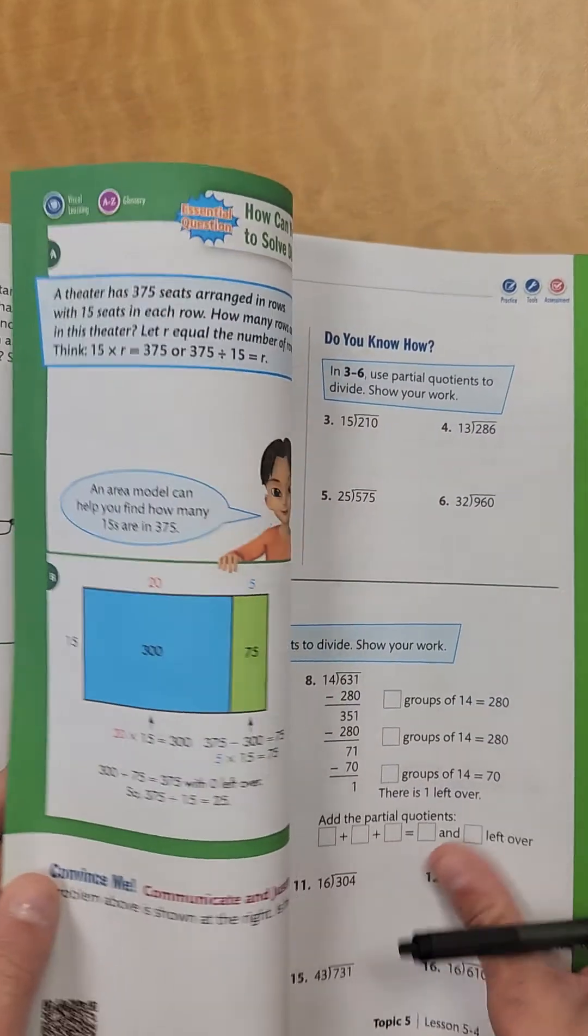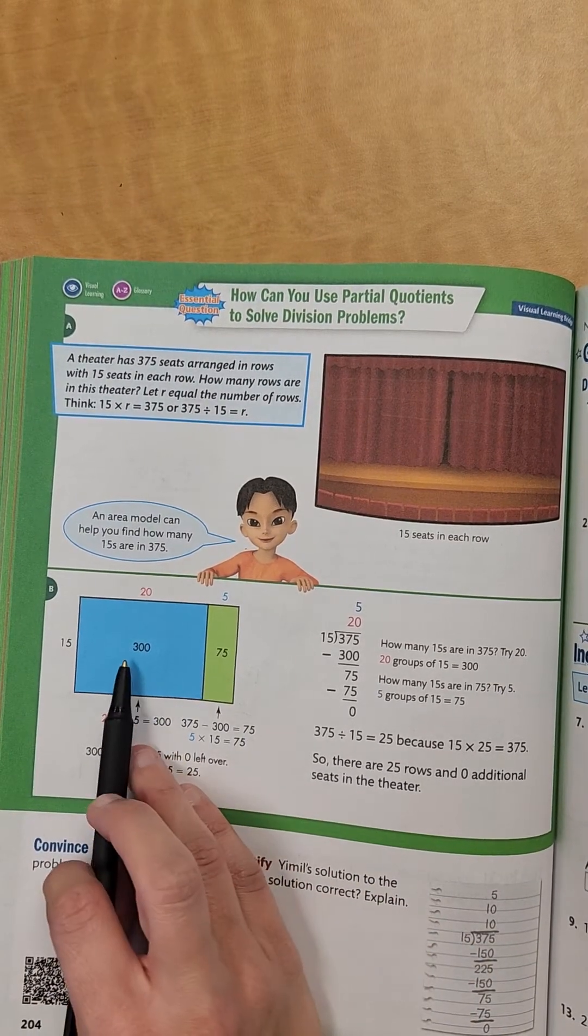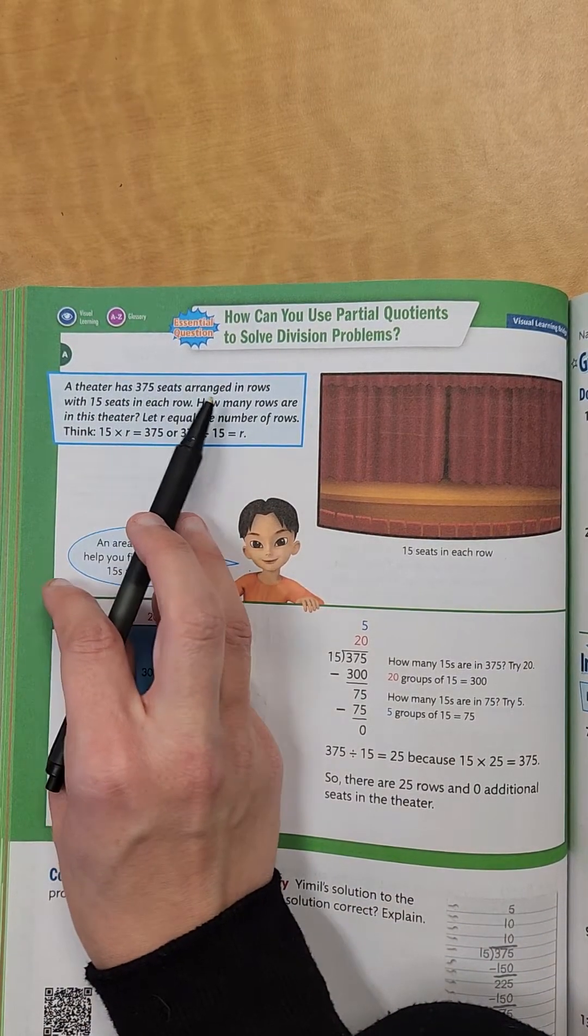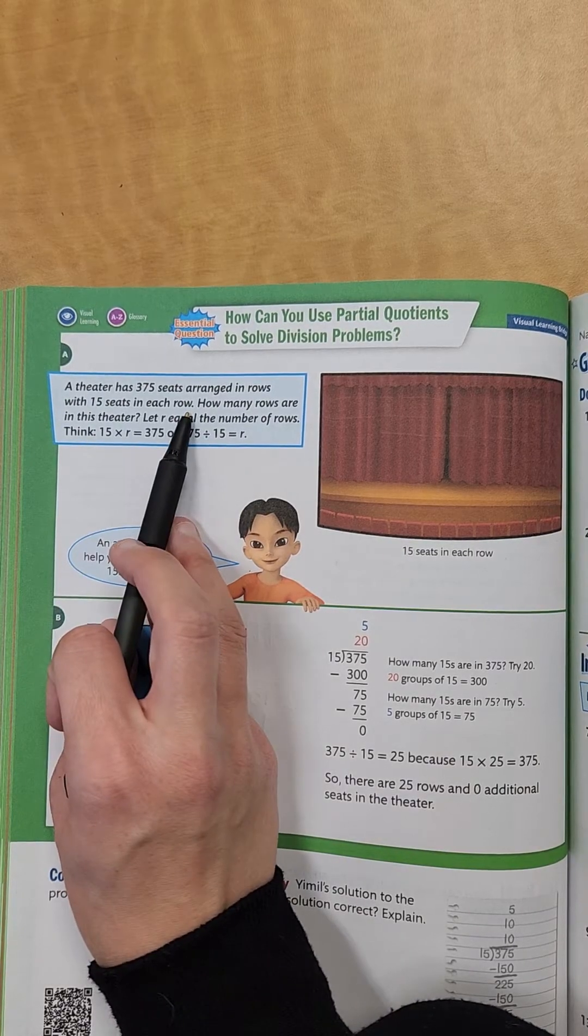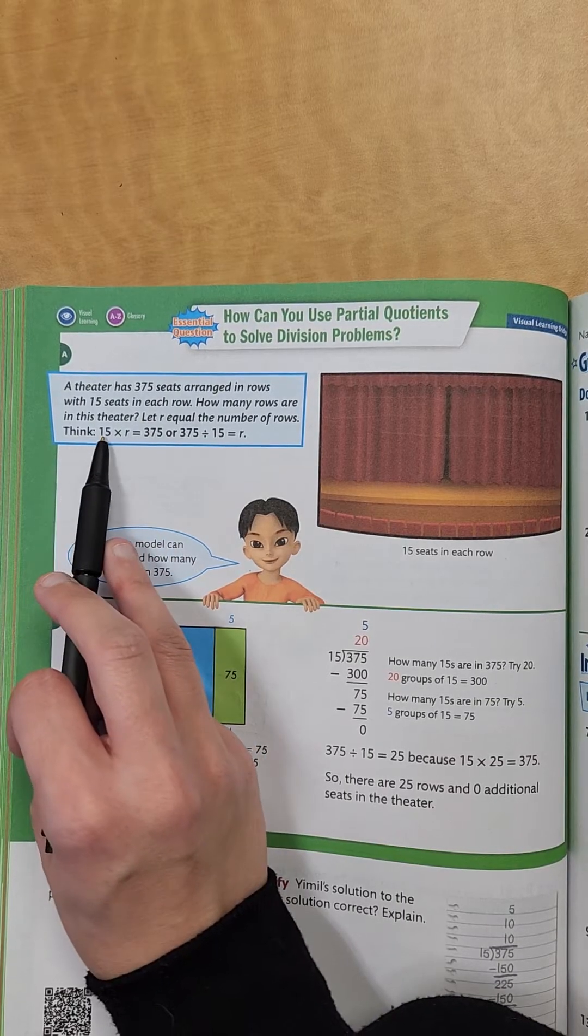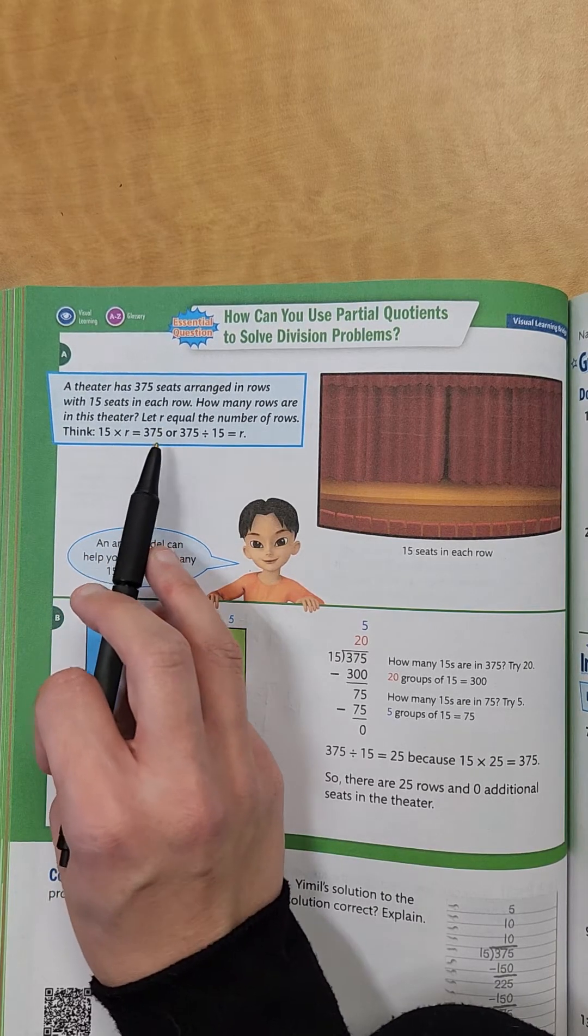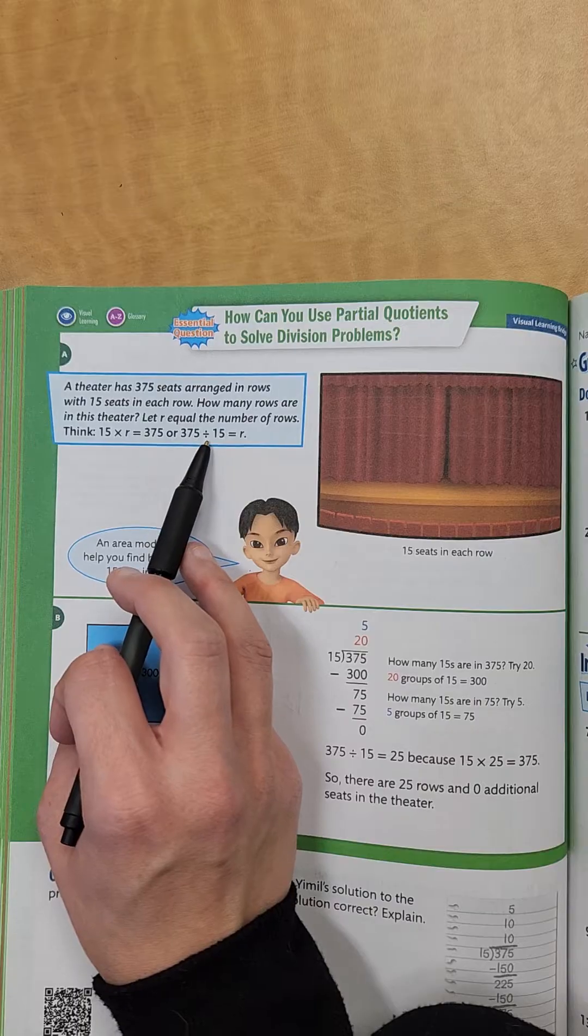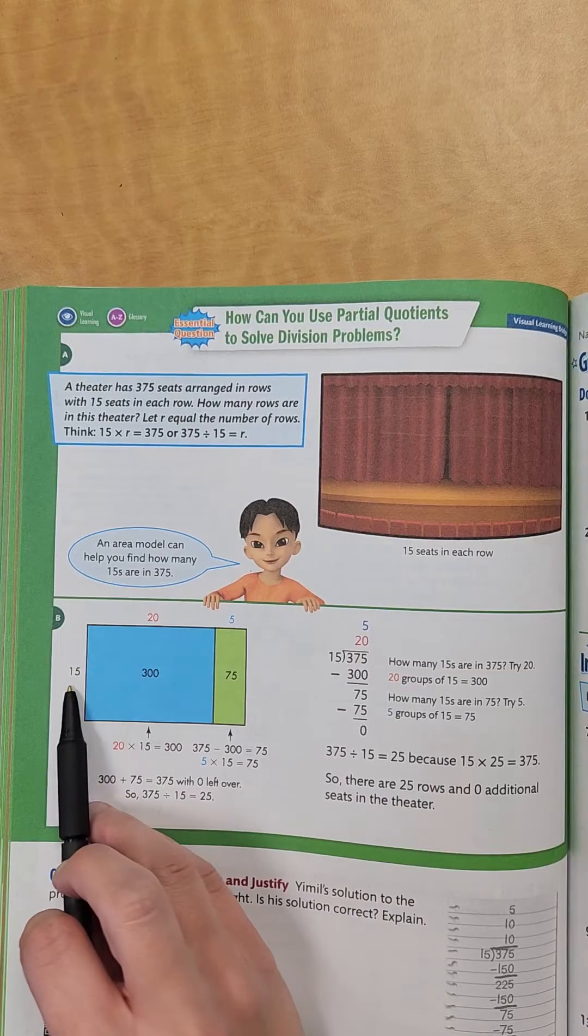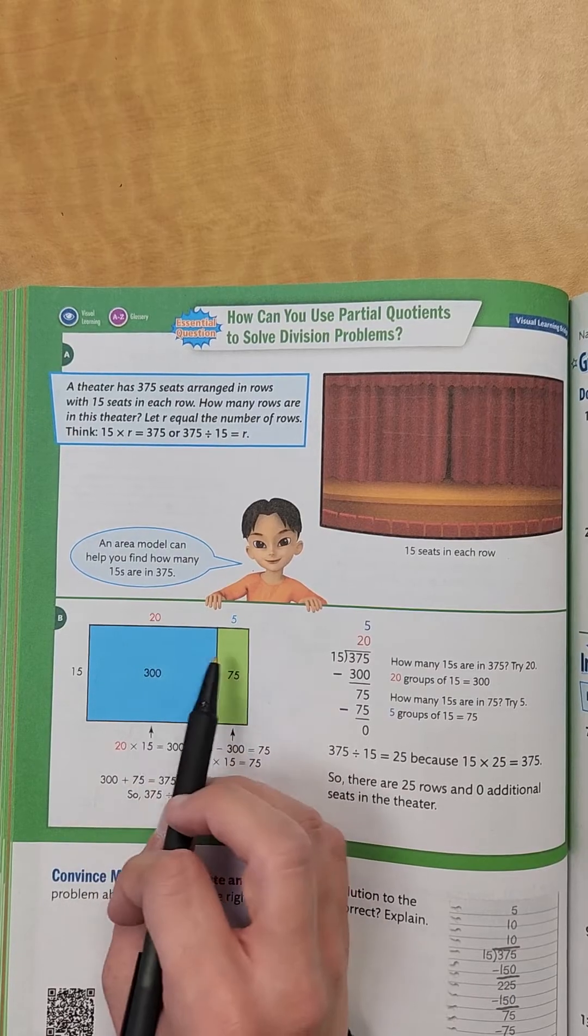Now on the other example that they give on the back page, because you know they're always going to give us another example, it shows us this box method, or the area model. So this is a theater, has 375 seats arranged in rows, with 15 seats in each row, how many rows are in this theater? Let R represent the number of rows. So we're thinking 15 times R, which is our number of rows, equals 375, or that's the same thing as 375 divided by 15 equals R.